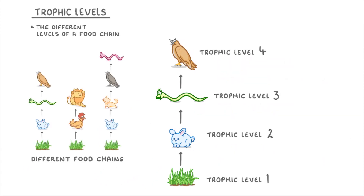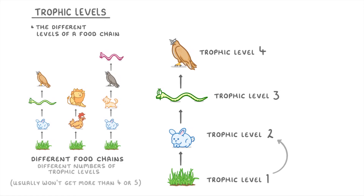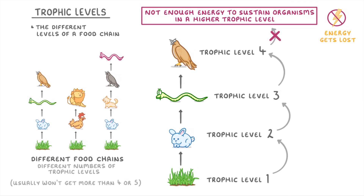Different food chains in different ecosystems will have different numbers of trophic levels, but you usually won't get any more than four or five. This is because every time you go up a trophic level some of the energy gets lost, so there's not enough energy to sustain organisms at much higher trophic levels. The general rule is that only about 10% of the energy in each trophic level actually gets passed on to the organisms in the next level.